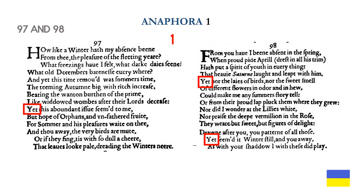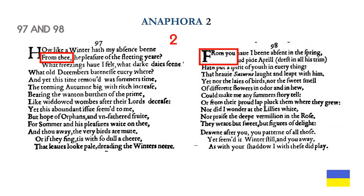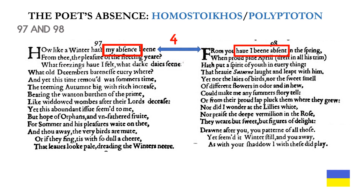Sonnets 97 and 98 are connected through the word yet — another example of anaphora and the triosunta omnia principle: it appears three times at the beginning of lines. Second example of anaphora: the word from. From thee on line 2 in sonnet 97, and from you on line 1 in sonnet 98 — a perfect example of akalautha, because you can substitute thee and you for each other without changing the meaning of the lines. Finally, we have the theme of the poet's absence, which appears on line 1 in both poems: my absence and have I been absent. Again, polyptoton and homo stoikos.